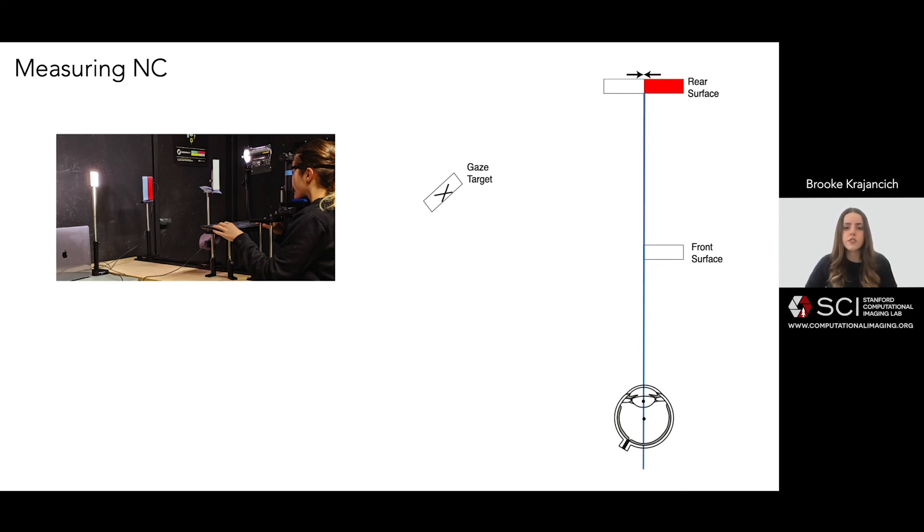The subject was instructed to rotate their eye 30 degrees to a fixation target when they were suddenly able to identify the presence of that hidden extent in the periphery. We then measured the distance that we could move this red extent towards the right and the subject still be able to detect its presence. This distance was then converted to the NC distance using the geometry of the setup.